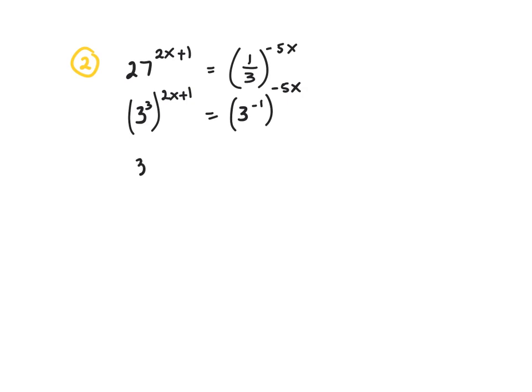So now we have 3 to the 3 times 2x plus 1 equal 3 to the positive 5x, because you multiply and that gives you a positive number. Now drop the bases because they're the same.